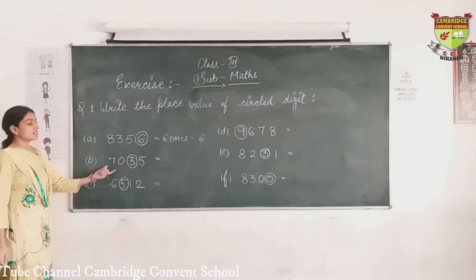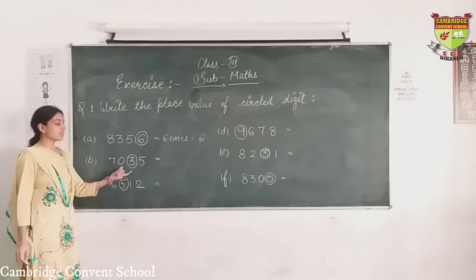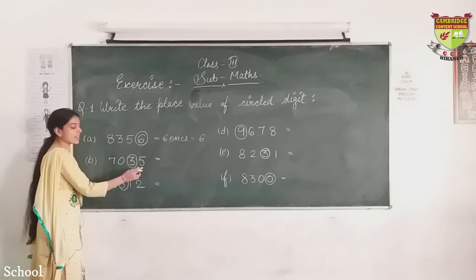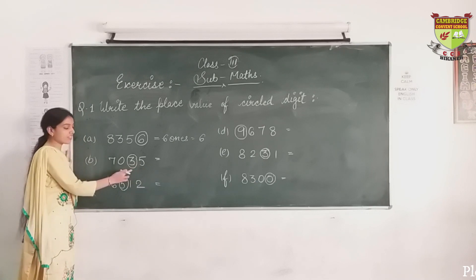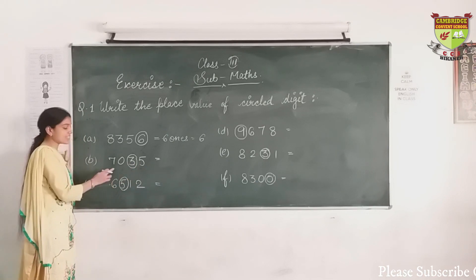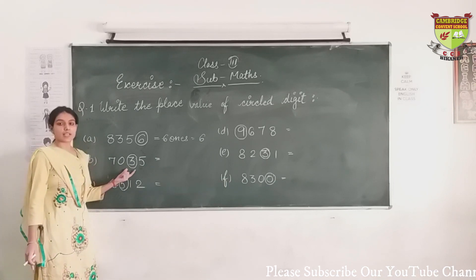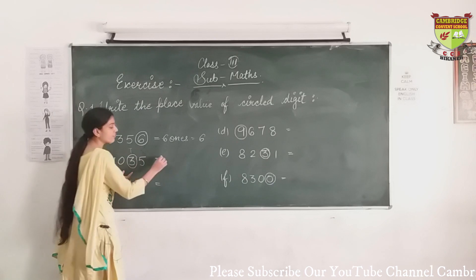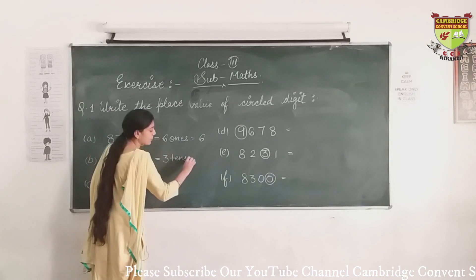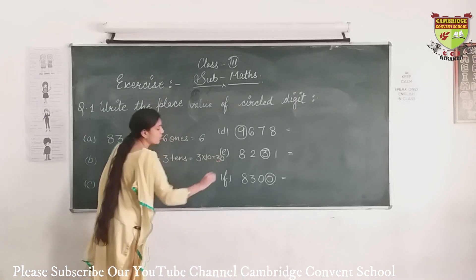Question B: the second number is 7,035. Starting from the extreme right: 5 is in 1's, 3 is in 10's, 0 is in 100's, and 7 is in 1000's. The circled digit is 3. Since 3 is in 10's place, we write 3 × 10 = 30. The place value of 3 is 30.